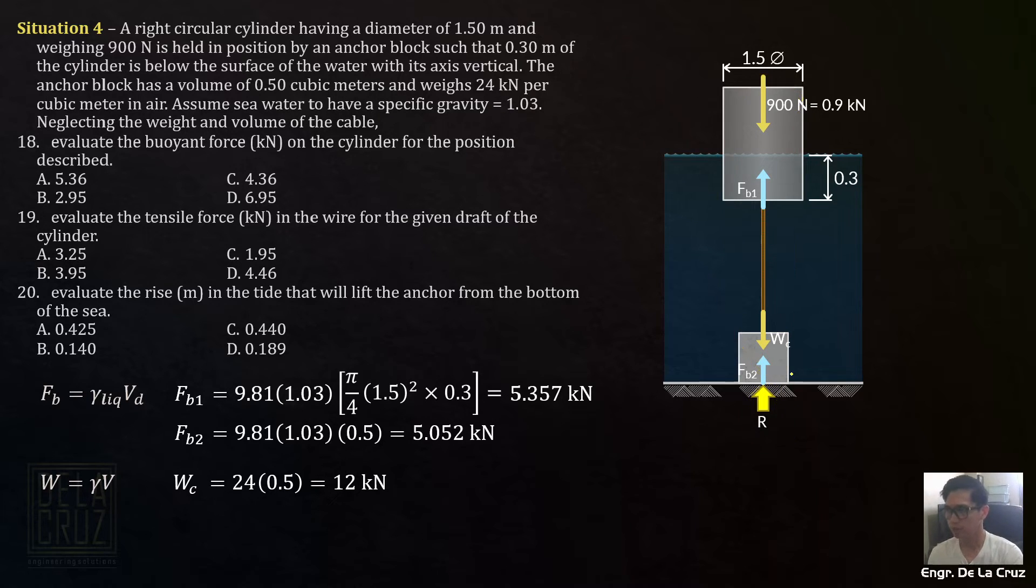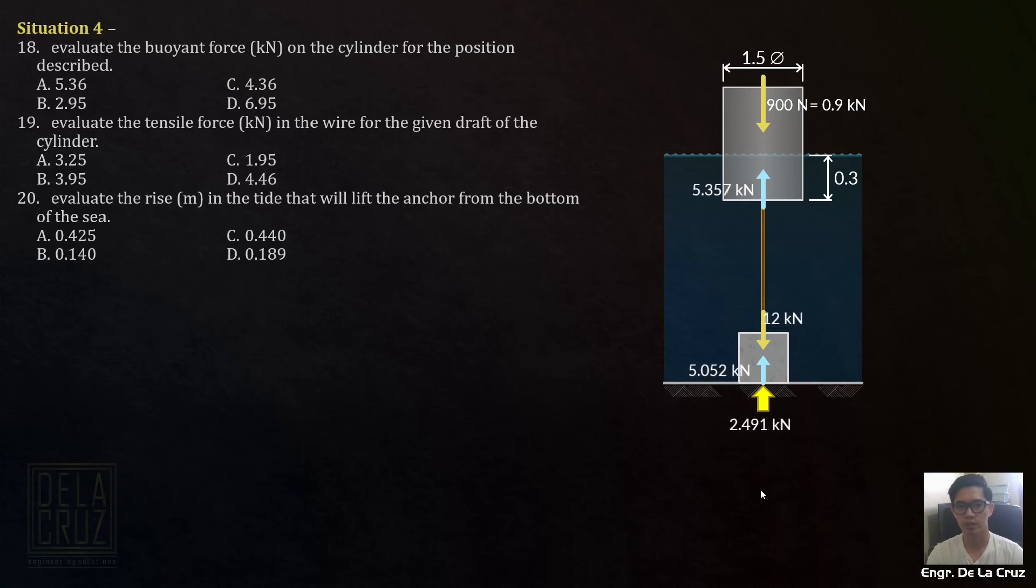We can solve for R. We could avoid R when getting tension later, but let's complete it. If we want to get the reaction at the seabed, sum the vertical forces. We have R upward, FB1 upward, FB2 upward. Minus downward forces, minus 0.9 kilonewtons, minus weight concrete equals 0. Take note, FB1 is 5.375, FB2 is 5.052, and weight of concrete is 12 kilonewtons. Getting the resulting reaction at the seabed, 2.491 kilonewtons. I completed all the forces before we answer one by one, so you better understand the scenario here. I'll place the forces on the figure.